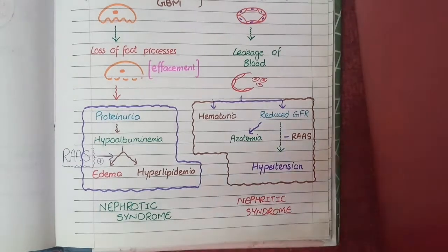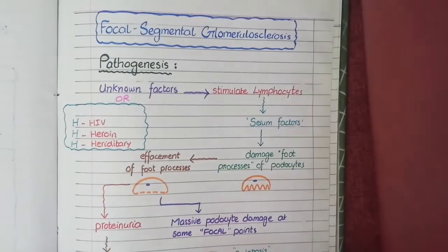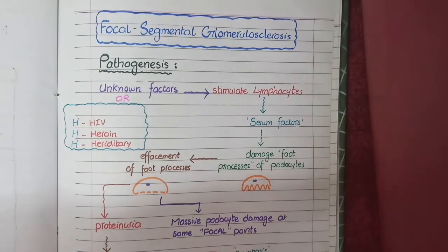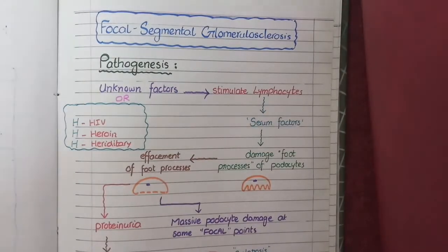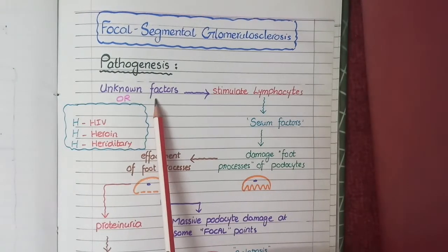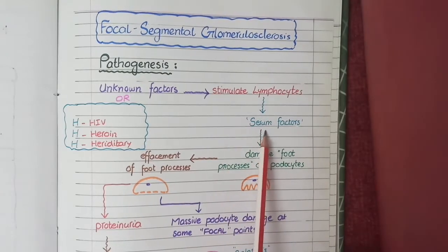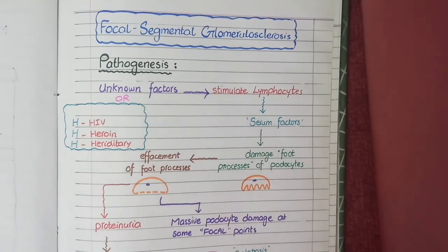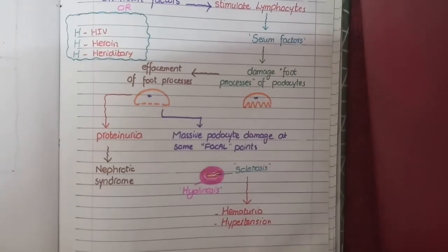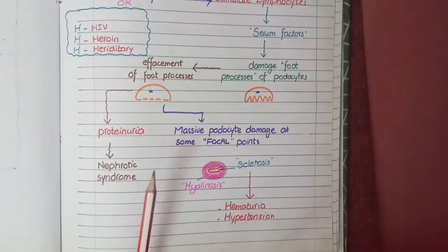This concludes minimal change disease. Now for focal segmental glomerulosclerosis. Its pathogenesis is almost similar to minimal change disease, with some important differences. The initial part is the same: unknown factors stimulate lymphocytes to release serum factors, which damage the foot processes of podocytes, causing effacement and leakage of plasma proteins into the urine, giving rise to nephrotic syndrome.